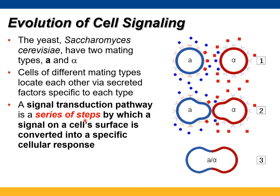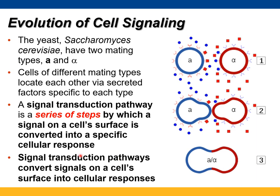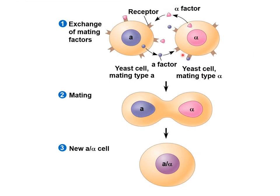We define signal transduction as a series of steps where information leads to a change in cellular behavior — most of the time, a change in protein behavior. The A cells and alphas secrete a factor that binds a receptor causing a fast cytosolic response, leading to fusion of the two cell types, and we get a diploid cell that will split off after genetic crossover has occurred.